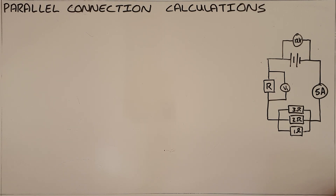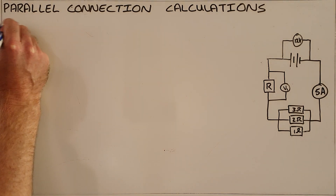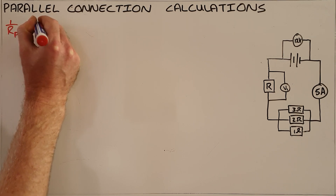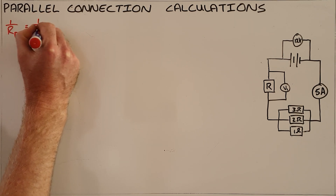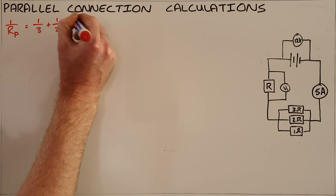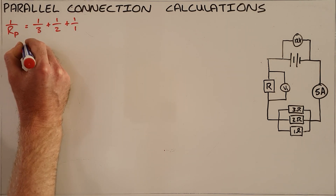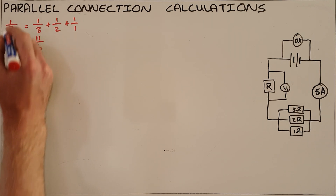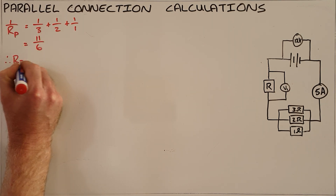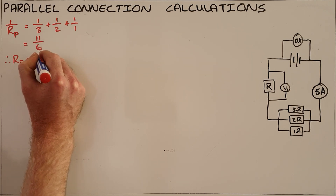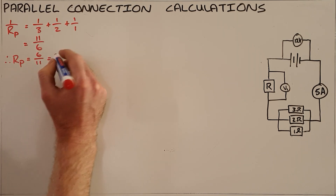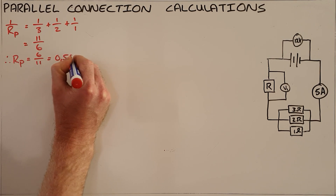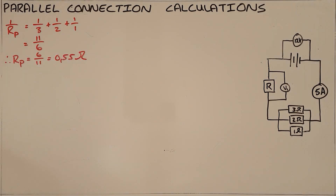Our first problem to solve is always to calculate the equivalent parallel resistance, and we do that by saying that one over the parallel equivalent is equal to one over each resistor. So one over the 3 ohm, one over the 2 ohm, one over the 1 ohm resistor, which we find comes to a total of 11 over 6. So the parallel resistance is therefore equal to 6 over 11, or 0.55 rounded to two decimal places.